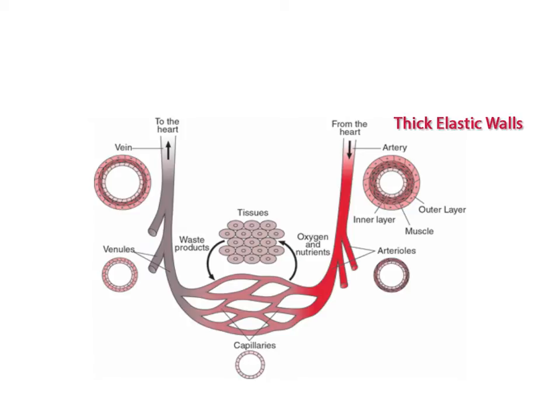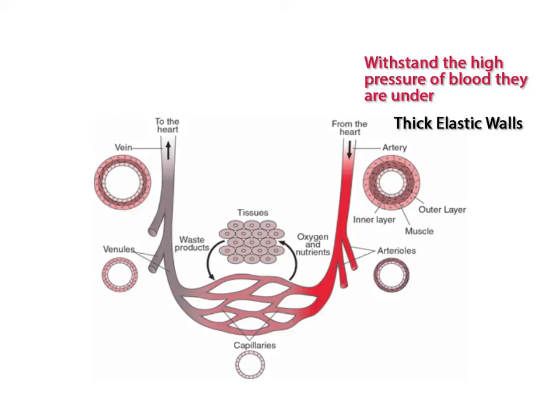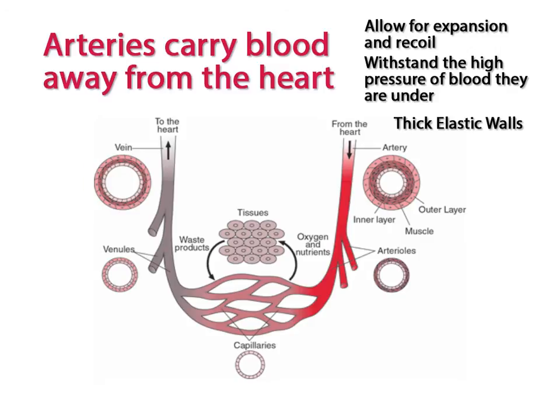Structurally, arteries have thick, elastic walls. Because the first blood vessel that blood enters as it is pumped out of the heart is the artery, the arteries are under an extreme amount of pressure. Therefore, the walls of the arteries have to be strong enough to withstand this high blood pressure, and elastic to allow for the expansion and recoil each time blood is pumped out of the heart. The function of the artery, then, is to carry blood away from the heart.